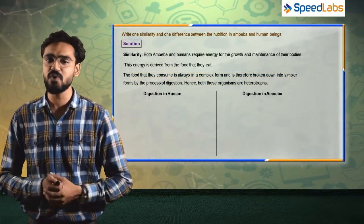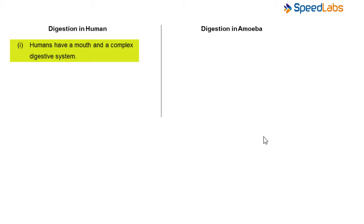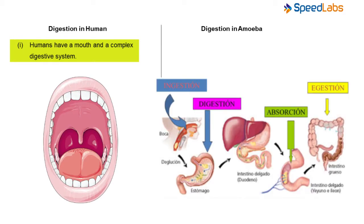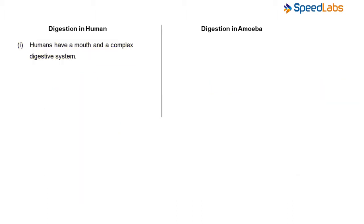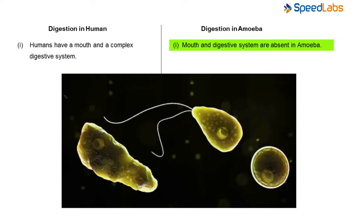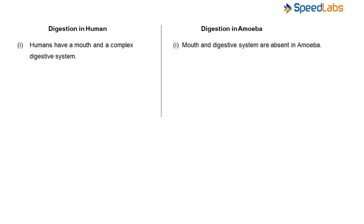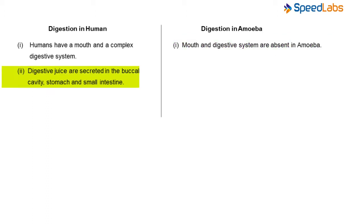Now, what are the differences? Firstly, in digestion in humans: humans have a mouth and a complex digestive system. We have a mouth, and in the complex digestive system, food is first chewed, then digestion happens at one place, absorption of food happens at different places, and there are different organs for different functions. But in amoeba, mouth and digestive system are totally absent — they have no mouth or digestive system because amoeba is unicellular and such complex organs could not develop.